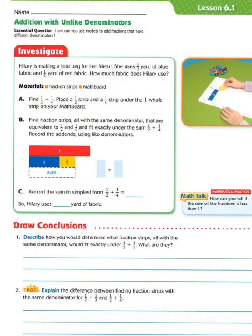Hi class, this evening we're going to be looking at GoMath Lesson 6.1, Addition with Unlike Denominators. So let's take a look at our essential question: How can you use models to add fractions that have different denominators?